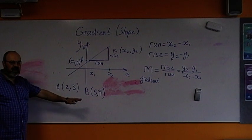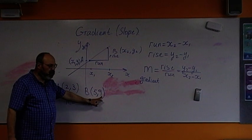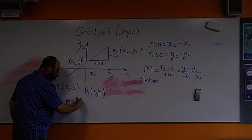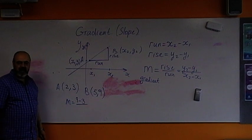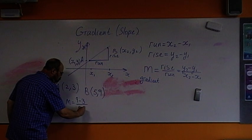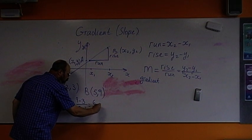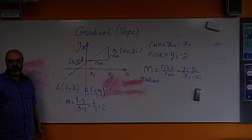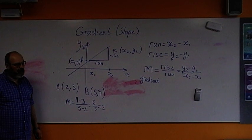Gradient equal rise over run. To find rise, what we do? We subtract, we do y2 minus y1, 9 minus 3, over x2 minus x1, 5 minus 2. So, we have 6 over 3 equals 2. So, gradient is 2. Make sense?